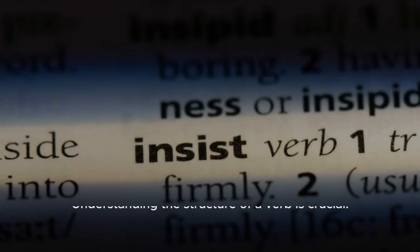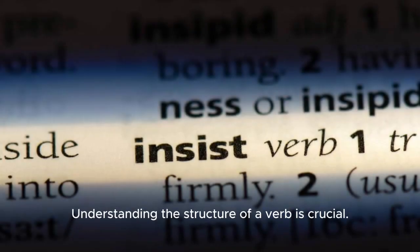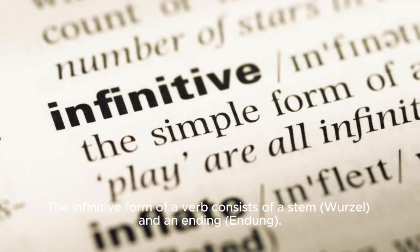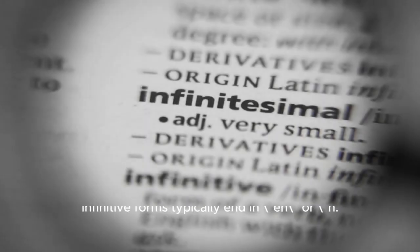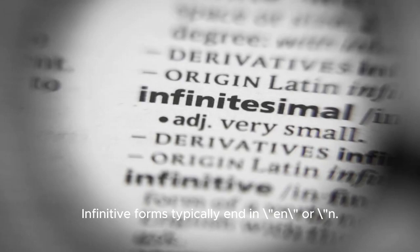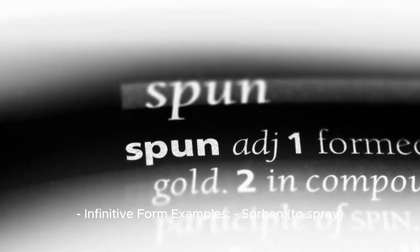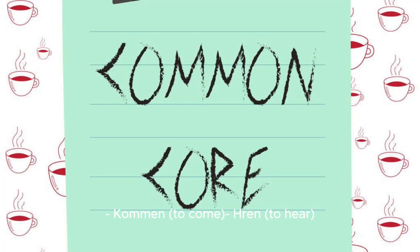Verb Structure: Understanding the structure of a verb is crucial. The infinitive form of a verb consists of a stem (Wurzel) and an ending (Endung). Infinitive forms typically end in -en. For instance, spielen has the stem spiel and the ending -en. Infinitive form examples: springen (to spring), kommen (to come), hören (to hear).